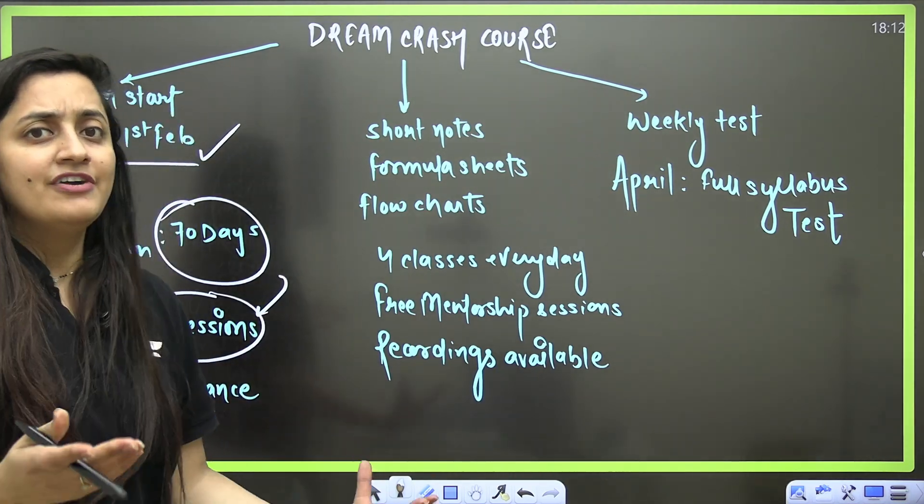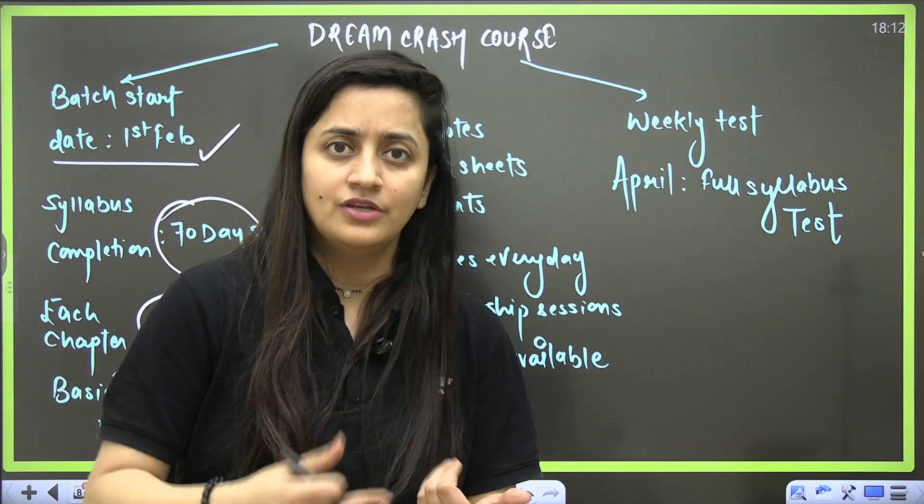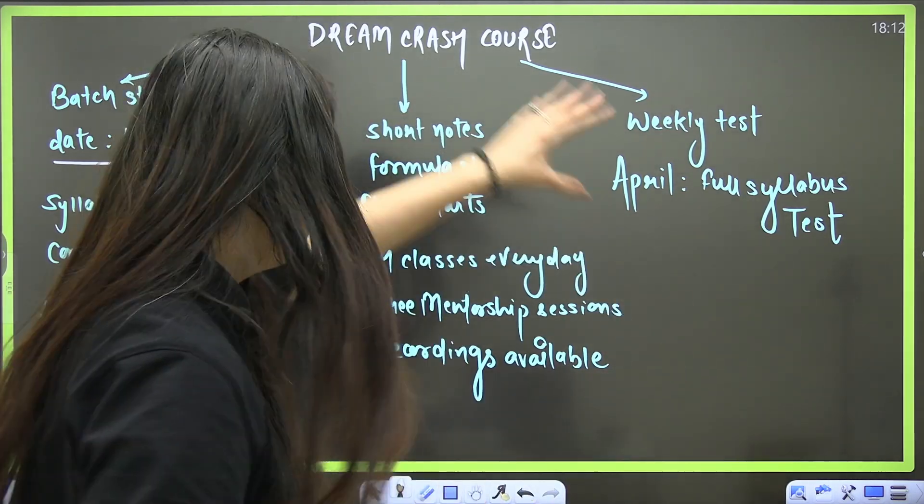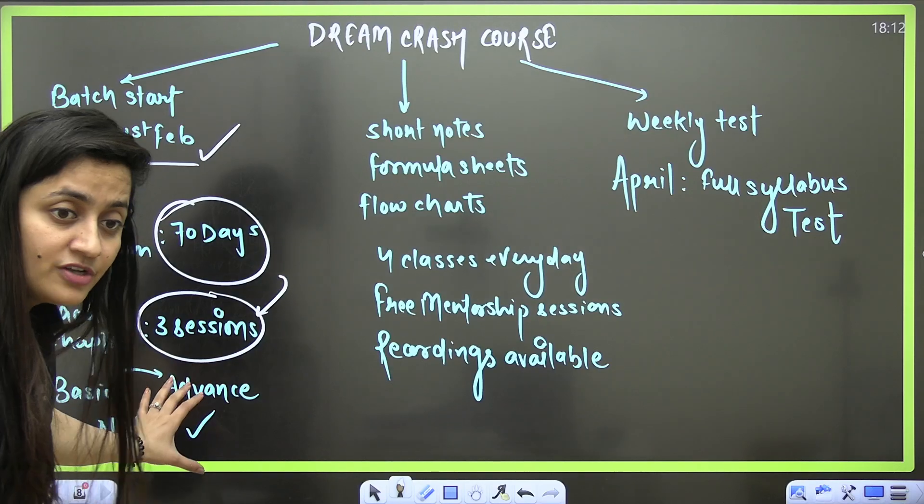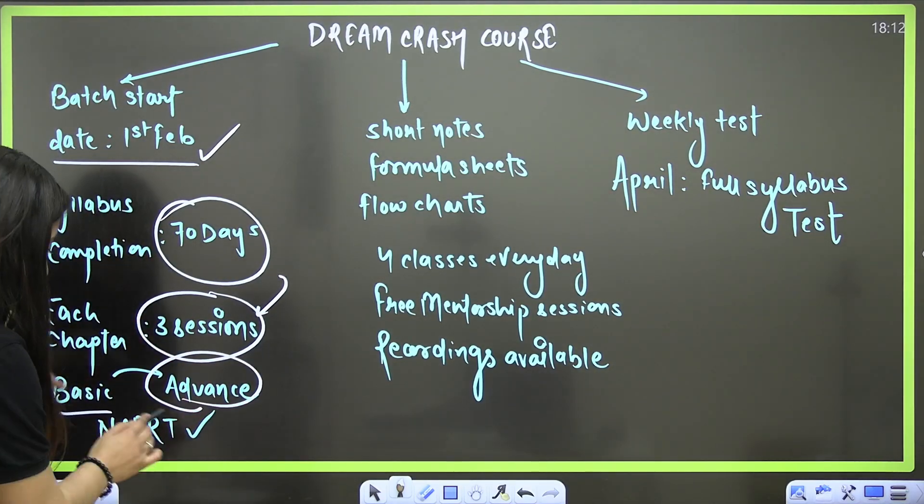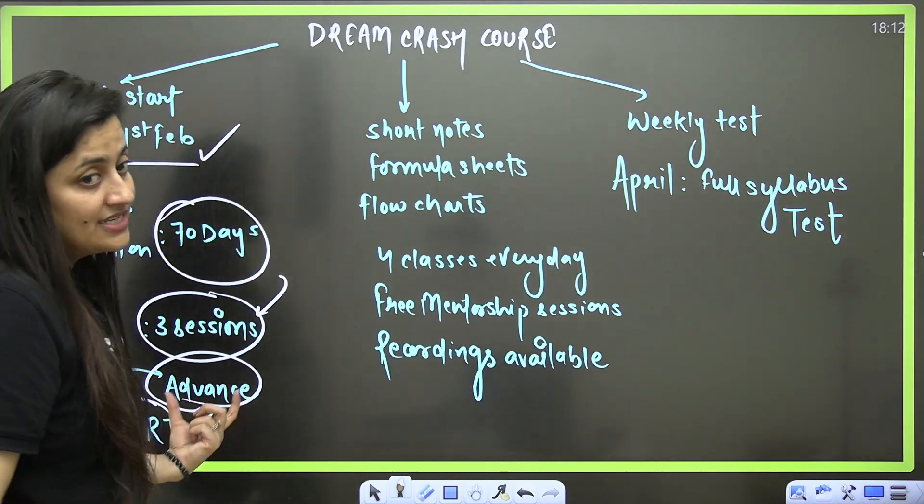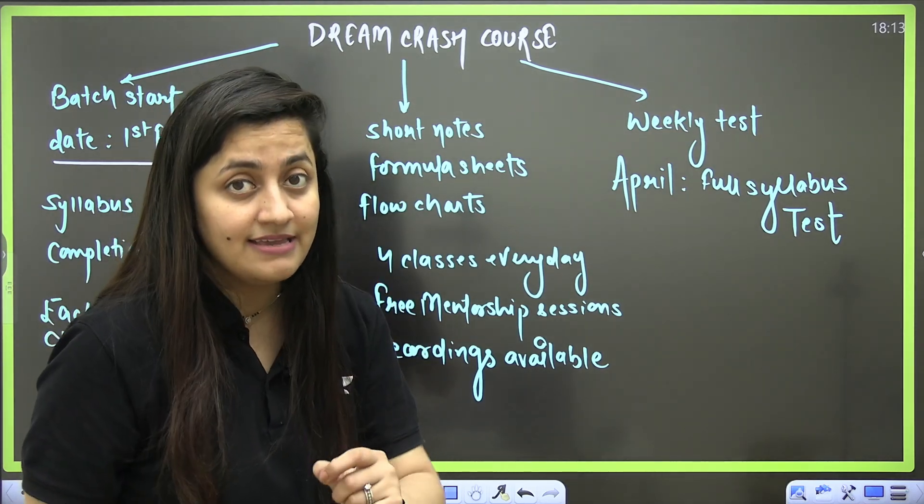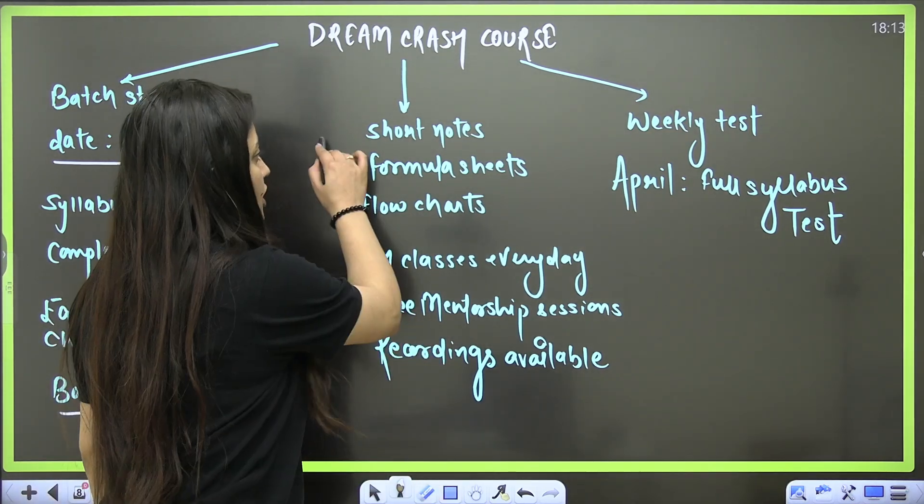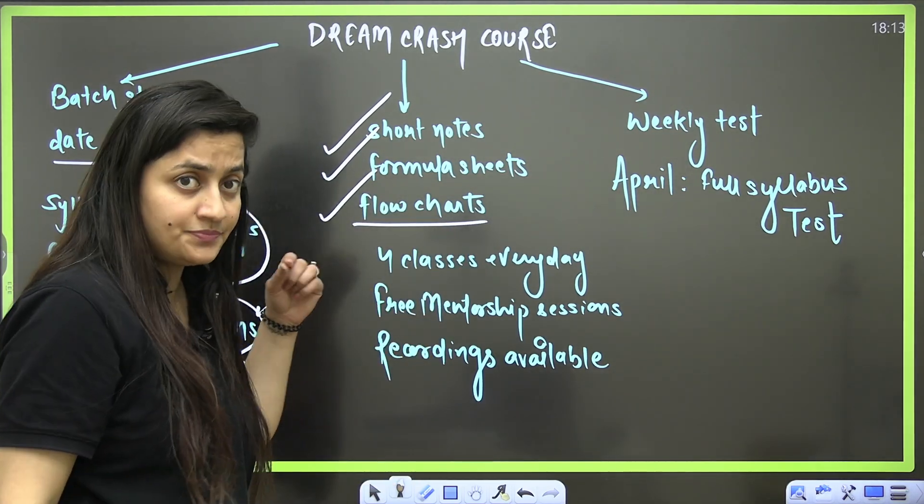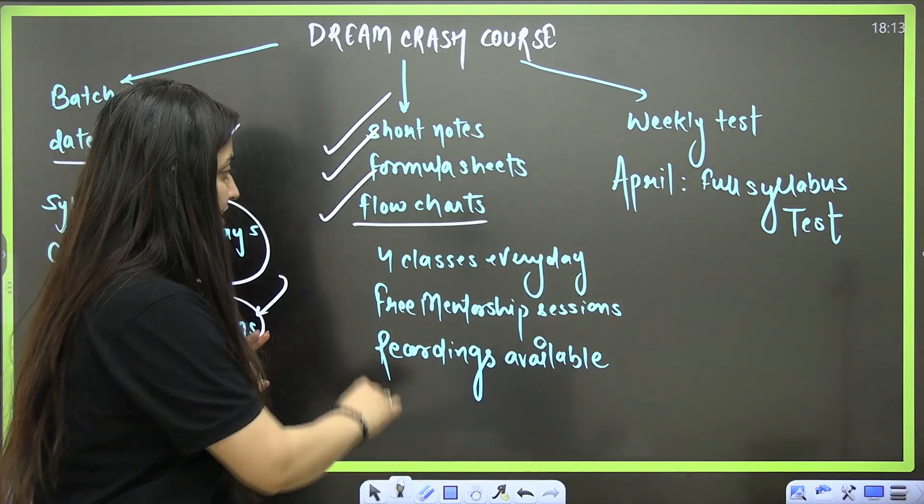If it is Living World, it needs one session. Obviously, Molecular Basis of Inheritance will need more sessions—we will give it there. That's how we are going to balance, same for physics and chemistry. We will touch the basics and then move to advanced level. It is the NCERT that we are going to cover. We are not going to miss anything from NCERT. Short notes, formula sheets, flow charts for organic chemistry, even for biology will be provided to you.